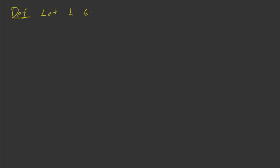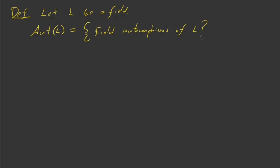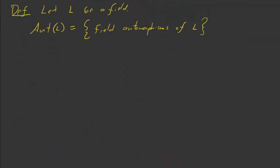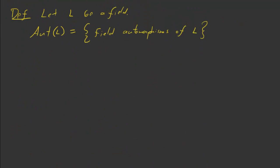So, definition: let L be a field. Aut(L) is the set of field automorphisms of L. The claim is that Aut(L) is a group — this is important — and it's a group under composition. Our set is Aut(L) and our binary operation is functional composition.